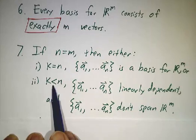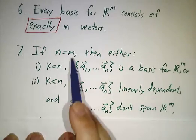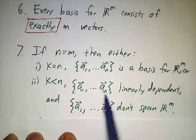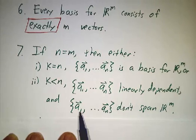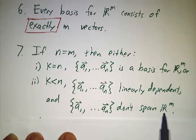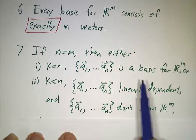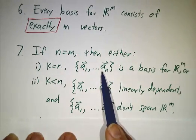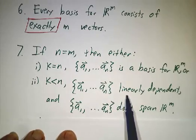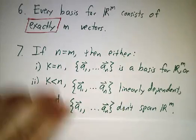If the rank is less than n, it's also less than m. It's less than n, so it's linearly dependent. It's less than m, so it doesn't span. So when you have the right number of vectors, either it's linearly independent and spans, or it's linearly dependent and doesn't span.